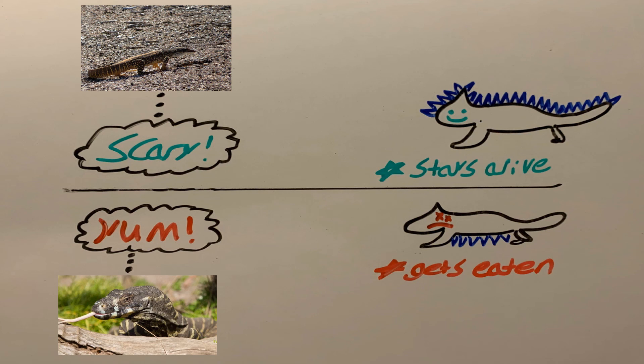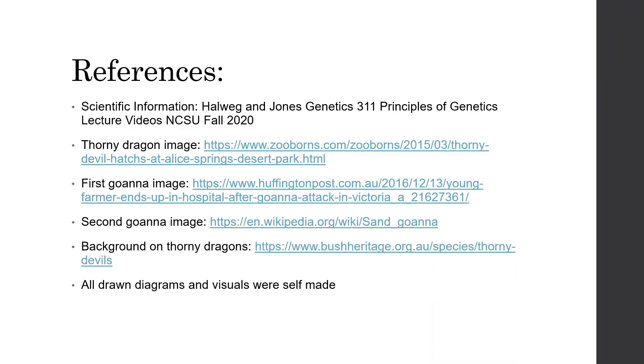In this diagram I made, the thorny dragon on top has spikes on the outside which is visible to the predator and scares it away, while the thorny dragon on the bottom has spikes not visible to the predator, making for a tasty snack. So even with the exact same genome sequences, the thorny dragons adapted in their environment, with the ones that have spikes on the outside of their body surviving and the ones having spikes on the underside not being so lucky. Here are the references I used.